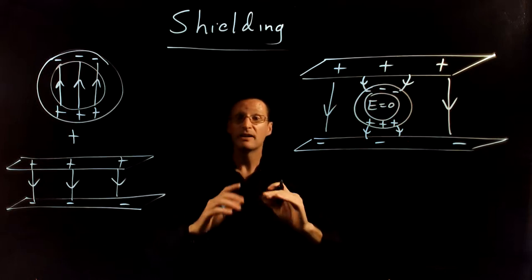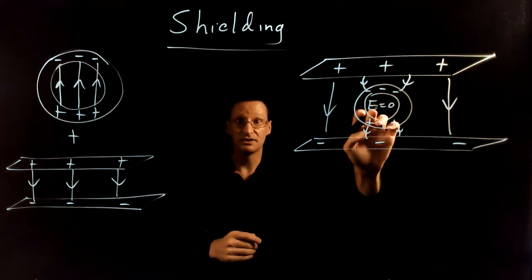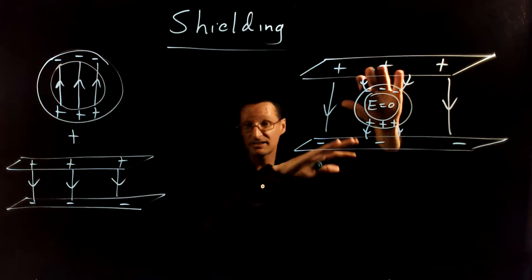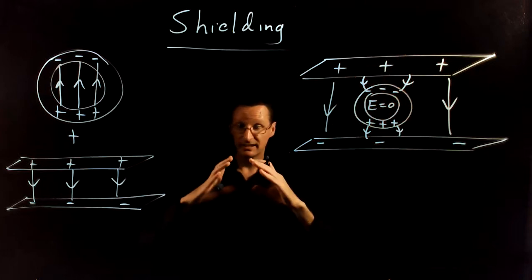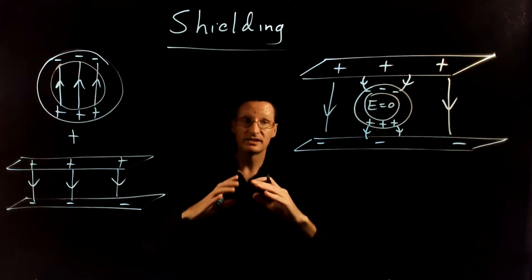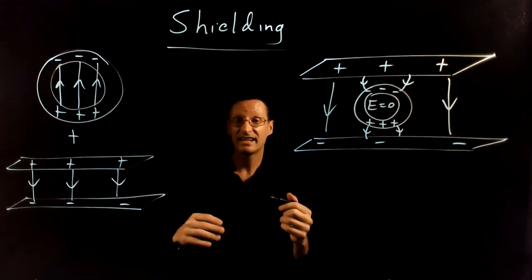This conductive pipe functions like a shield. And inside, if there's some outside electric fields, the charges inside the conductor will rearrange themselves to make the electric field inside zero.